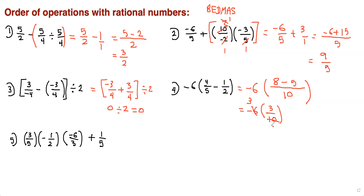We cannot reduce anymore. Multiply that out and the answer is going to be negative. Multiply 3 into the 3 to get 9, and you don't multiply the 5 by anything. Here we have multiplication with an even number of negatives, so the answer is going to be positive. I see this 3 reduces with this 3, both giving 1. Also, this 2 goes into itself once and into 6 three times.